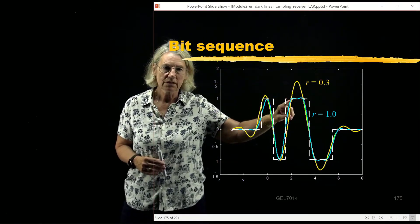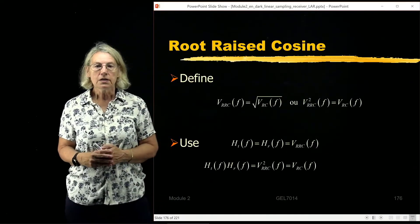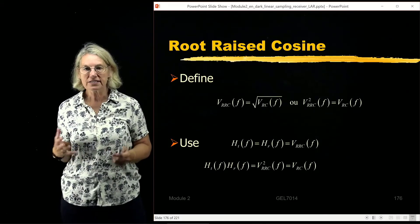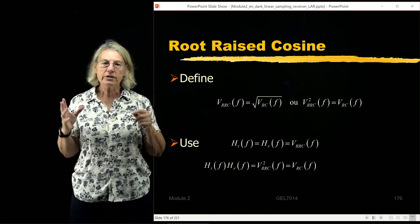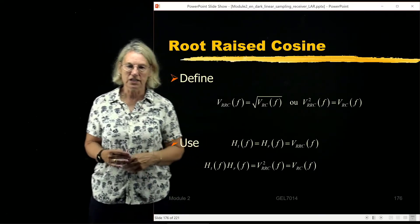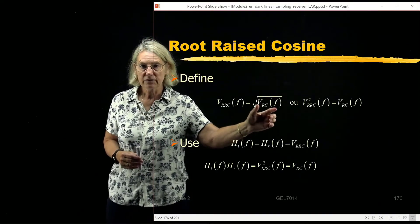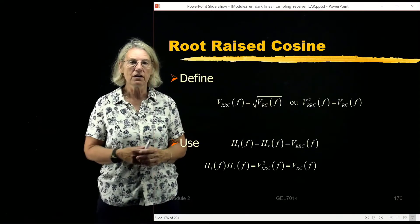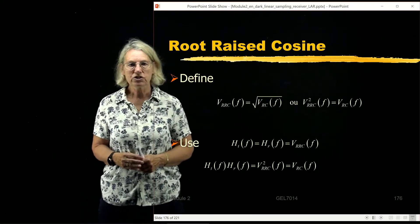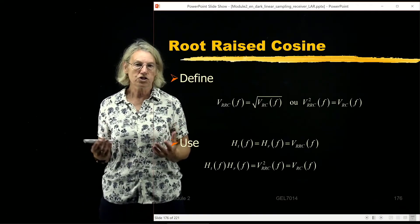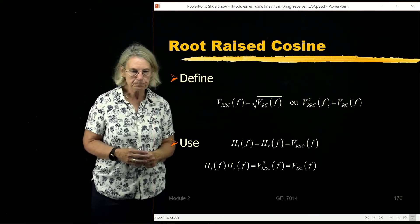So that brings us to this discussion of the root raised cosine. The root raised cosine, I said it's not really a Nyquist pulse but it's closely associated with the raised cosine. I'm going to take the raised cosine, I'm going to call it V_RC of F, and I'm going to assume this is in the frequency domain. I'm going to take the square root of that frequency response and I'm going to call that a new pulse shape which in the frequency domain is V_RRC or root raised cosine.